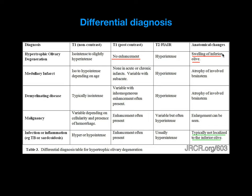Coming to differential diagnosis, always remember medullary infarct, demyelinating diseases, malignancy, and infection or inflammation such as tuberculosis or sarcoidosis. Look for the characteristic features. The important thing to remember is that in hypertrophic olivary degeneration there is no post-contrast enhancement, and the olivary nucleus is swollen and enlarged, which has a classic appearance.